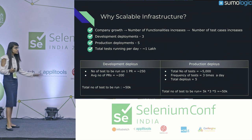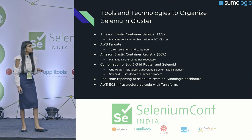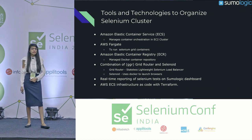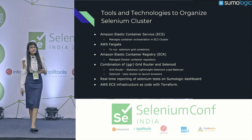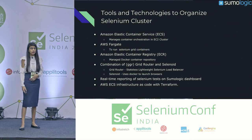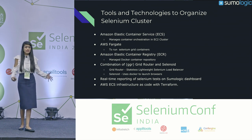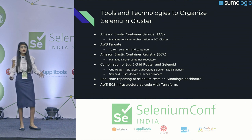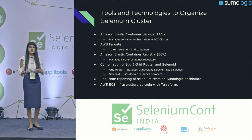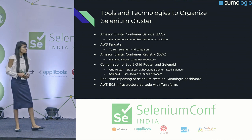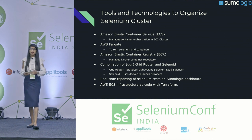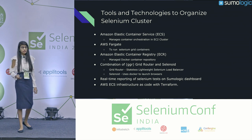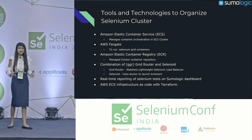Let me discuss the tools and technologies we are using to build our Selenium Grid infrastructure for UI automation. First is AWS Elastic Container Service — ECS is a managed, highly available, and scalable container management service that manages containers on an EC2 cluster. Next, we are using AWS Fargate to run Selenium Grid containers without needing to manage the underlying infrastructure. AWS just instructs Fargate to run a certain number of containers, and Fargate takes care of the rest. Next is AWS Elastic Container Registry, a repository where we can store and manage Docker container images.